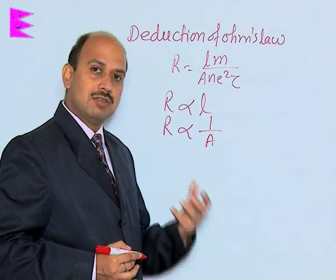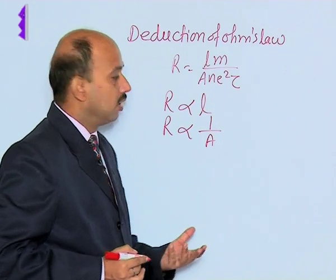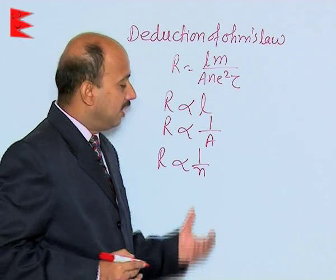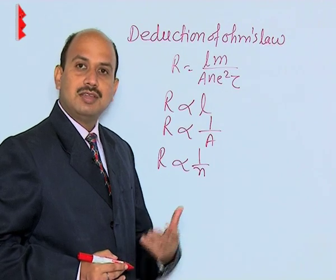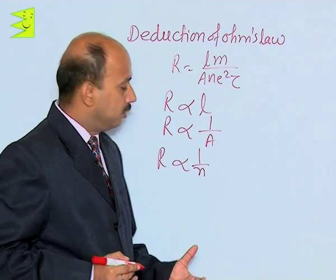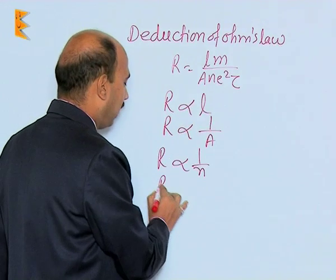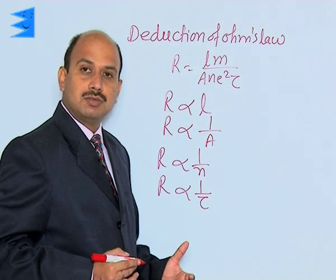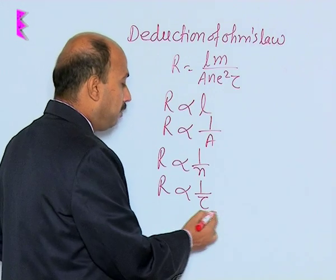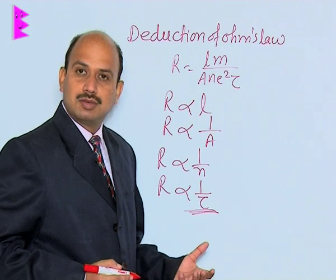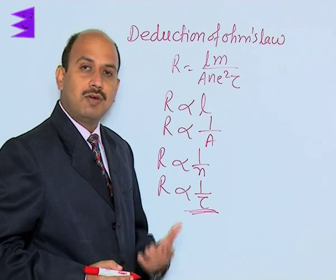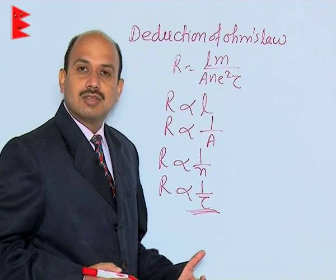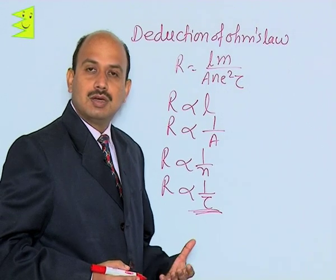We can also say R is inversely proportional to N, where N is the number of electrons per unit volume, which actually decides the nature of the conductor. Larger the number of electrons per unit volume, better is the conductor, meaning less is the resistance. We can also write R is inversely proportional to τ. Tau is the average relaxation time, or simply the average time interval between two successive collisions of the electrons. If temperature remains constant, τ will remain constant. If you increase the temperature, collisions become more frequent and τ will reduce, and if τ reduces then the resistance of the conductor will increase. These are the factors on which the resistance of the conductor depends.